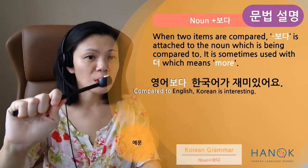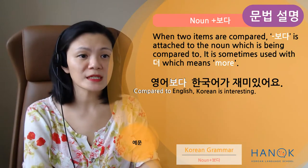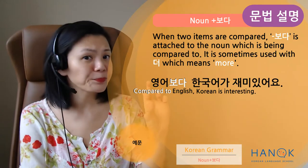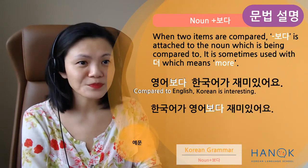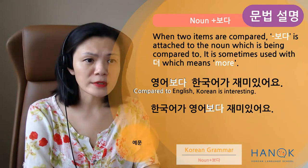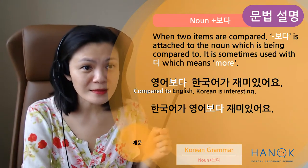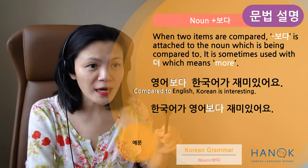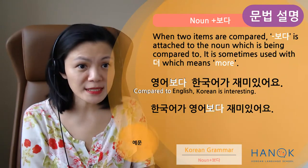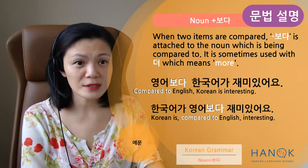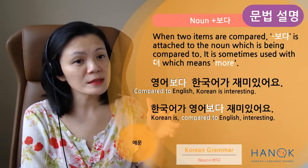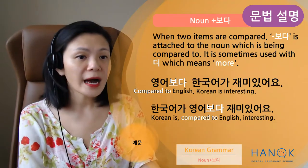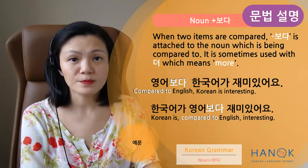영어 보다 한국어가 재미있어요 — compared to English, Korean is interesting. Now we're going to look at the same sentence with some changes. 이거 보세요. 한국어가 영어 보다 재미있어요. This is exactly the same sentence, but something is switched. As you can see, 한국어가 and 영어 보다 have changed position. This is the same meaning — there's no difference. 한국어가 영어 보다 재미있어요 — it's fine too. 괜찮죠?